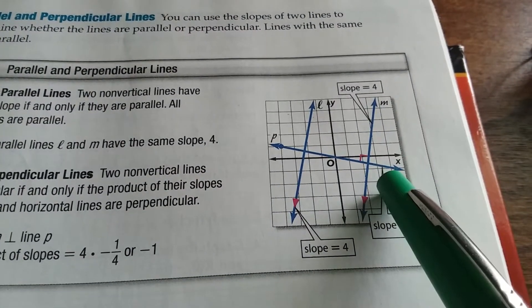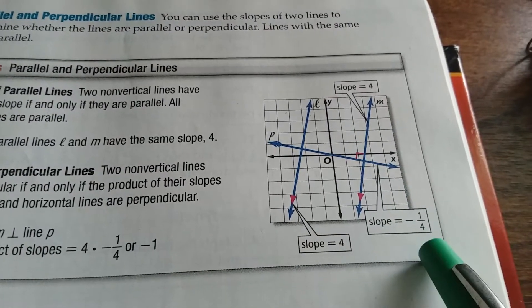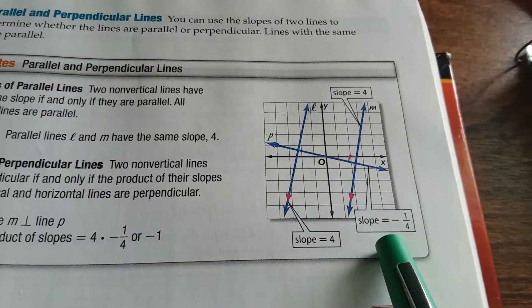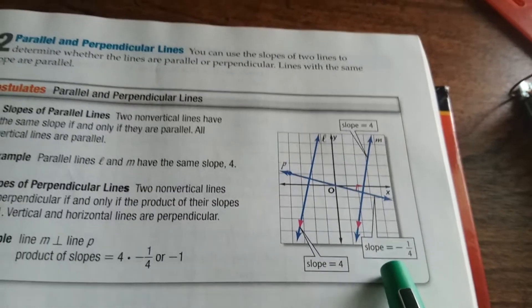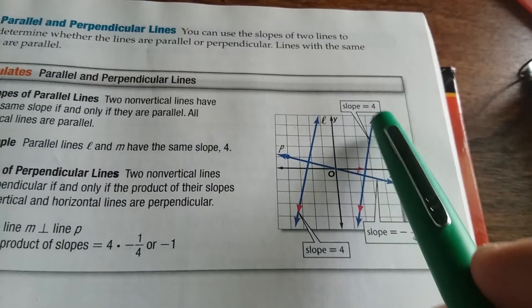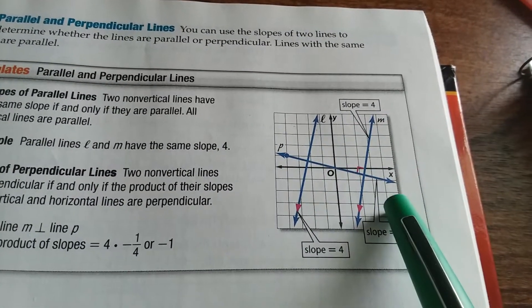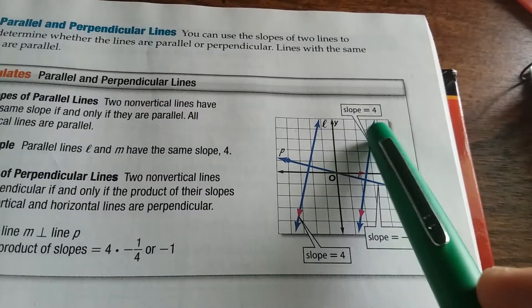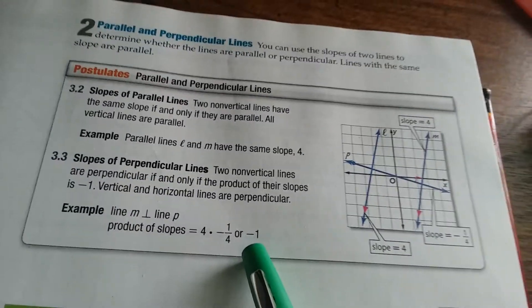Now if you look at this line here, line P, line P has a slope of negative 1 fourth. Lines are perpendicular if and only if the product of the slopes is negative 1. So line M and P are perpendicular because if you do 4 times negative 1 fourth, your product is negative 1.